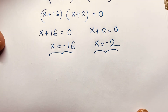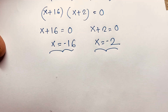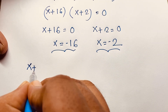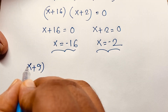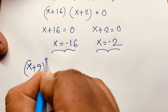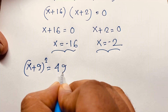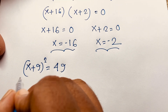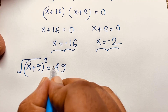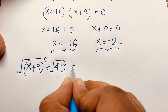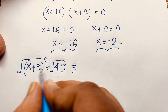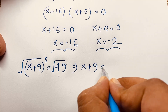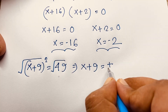Now I will solve this question using another method — an easy method. Here, (x + 9) to the power of 2 is equal to 49. I use the square root on both sides. Then the square and square root cancel out. We find that x plus 9 is equal to plus or minus 7.